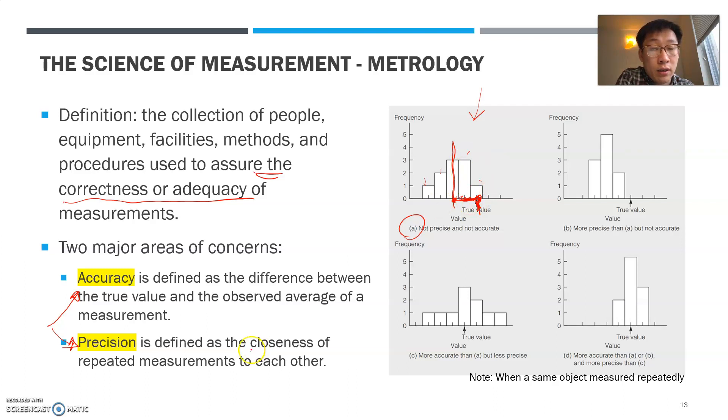Precision is defined as the closeness of repeated measurements to each other. If you compare this, it is still not very accurate because average is here, true average is here. However, this is slightly better than this in terms of the precision. Each repeated measures are close to each other, therefore you are seeing less bar here. Let's move on to here. It is very accurate because the average of the distribution overlaps with the true average. However, it is not a very precise measurement. So if you move on to the next one, this is both accurate and both precise measurement.